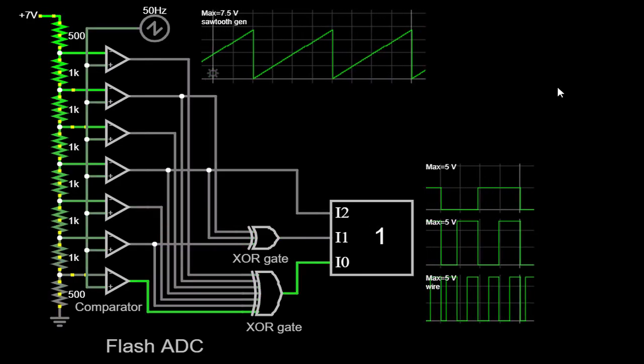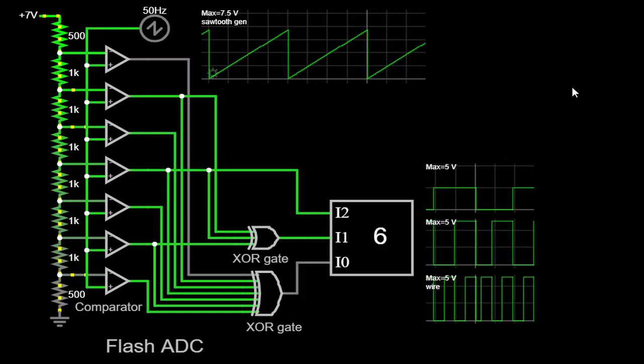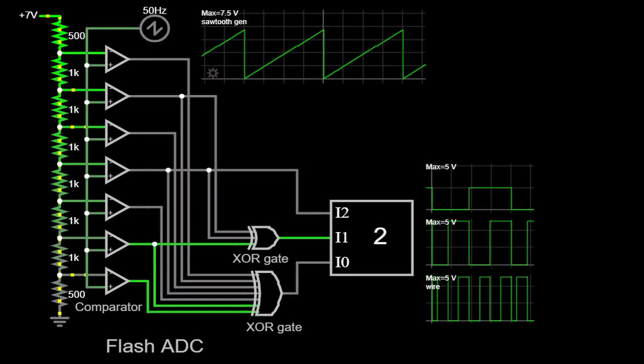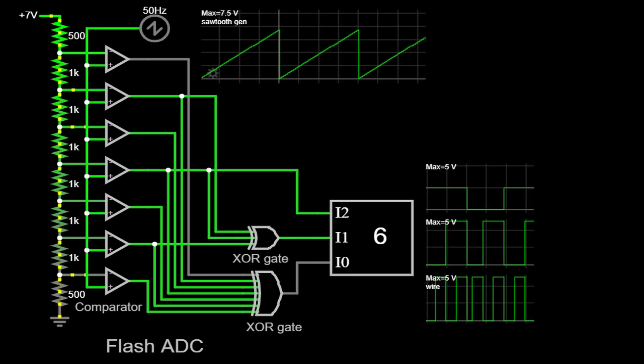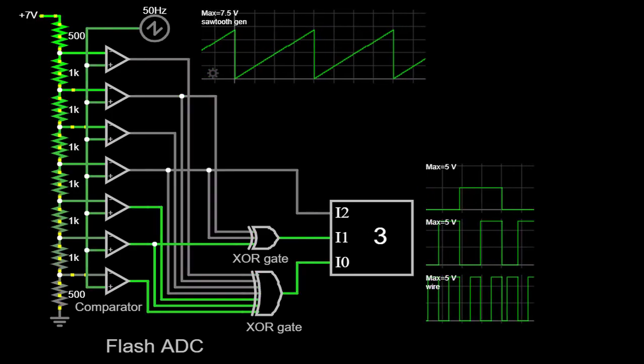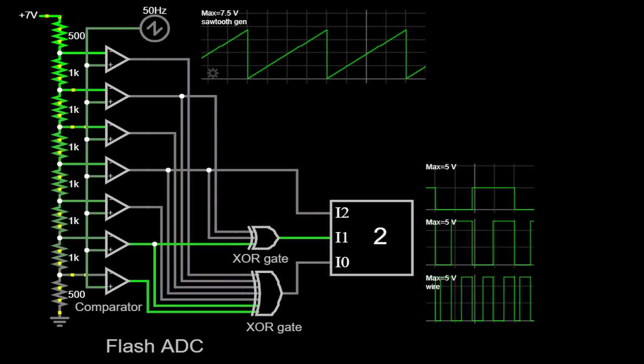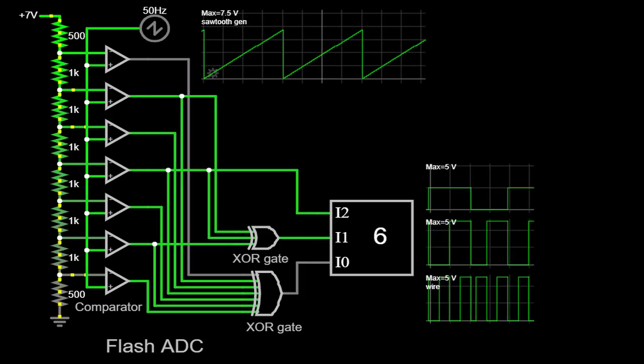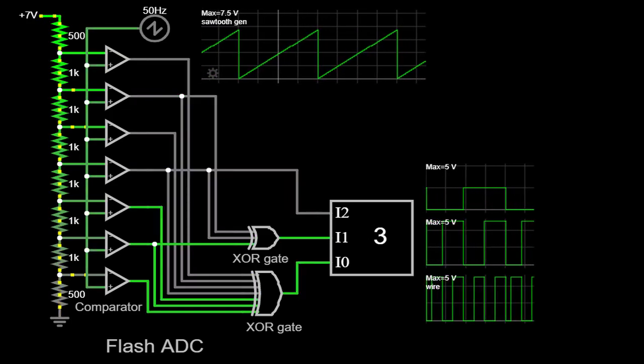Before we proceed, let's take a moment to understand the concept behind a Flash ADC. A Flash ADC, or parallel ADC, is a type of analog-to-digital converter that accomplishes the conversion process by comparing an input voltage against a predetermined set of reference voltages.